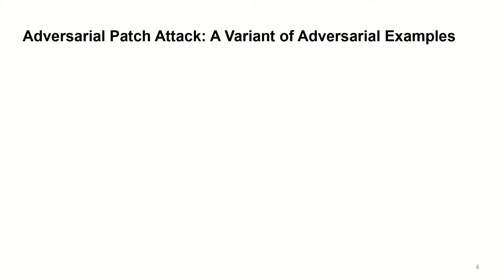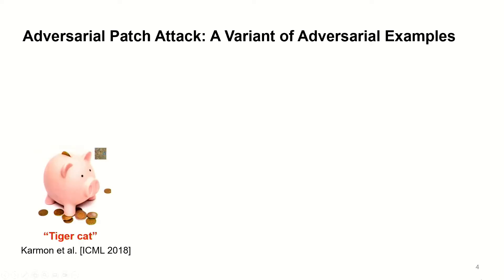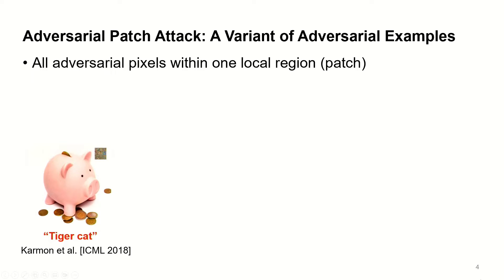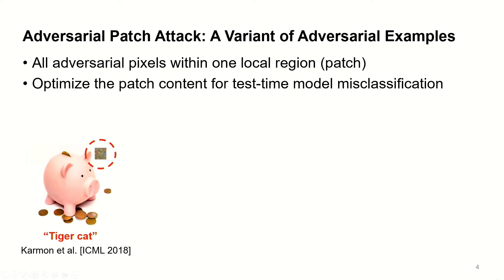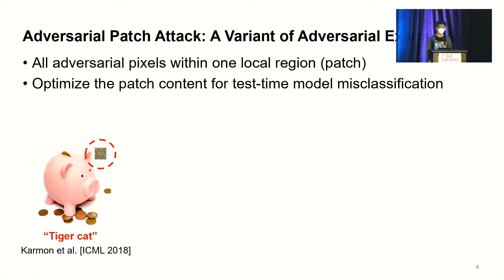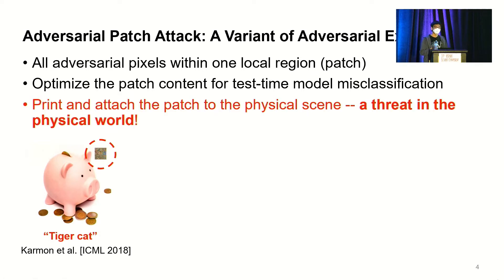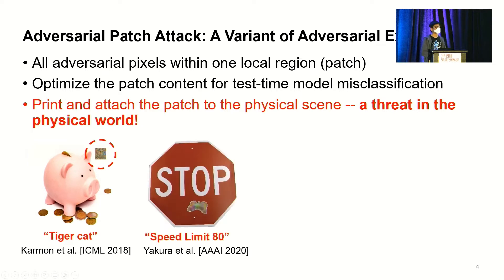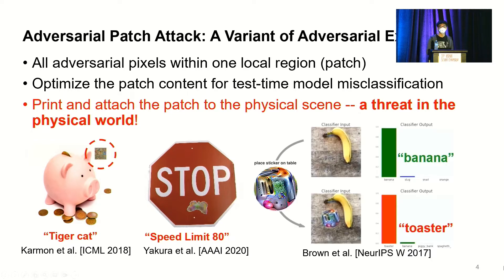The adversarial patch attack is a variant of the adversarial example attack against machine learning models. The attacker puts all adversarial pixels within a local region to form a patch, then optimizes the patch content to induce test-time model misclassification. The interesting thing is that the attacker can print and attach the patch to a physical scene, so any image taken of that scene becomes adversarial. For example, a sticker on a stop sign can change it to a speed limit sign, and a patch on a table can change a banana to a toaster.